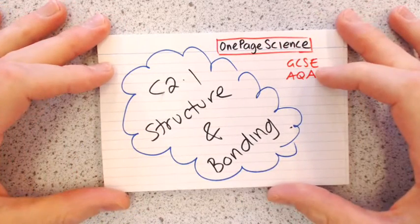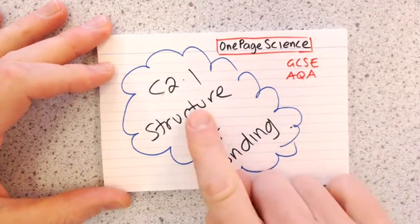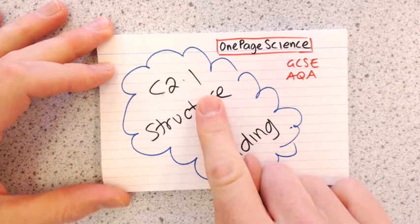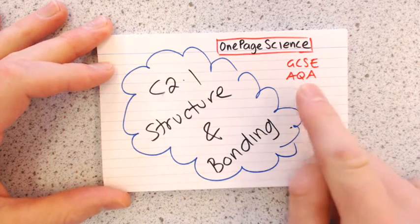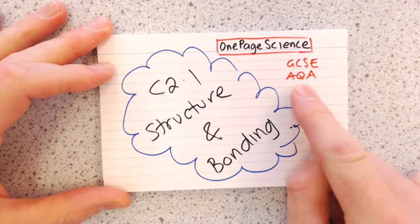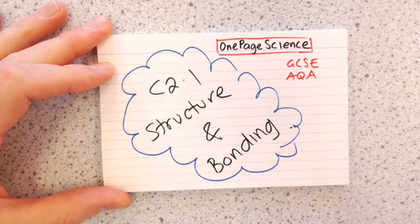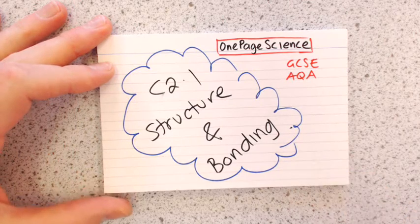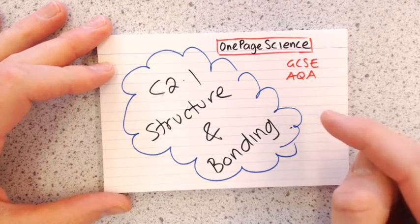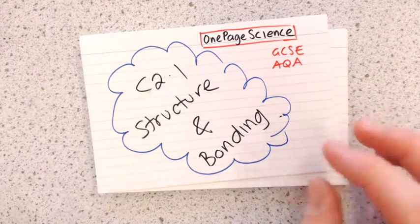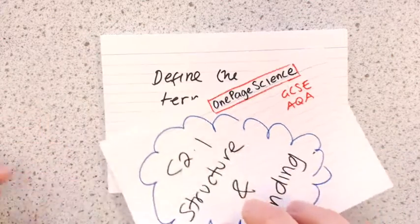Here's a deck of flashcards to take you through C2.1, the first topic in AQA's GCSE for unit C2A. The topic is called Structural Bonding.